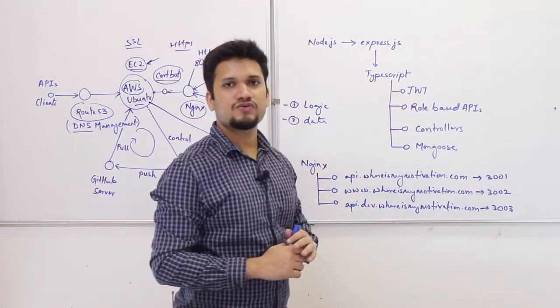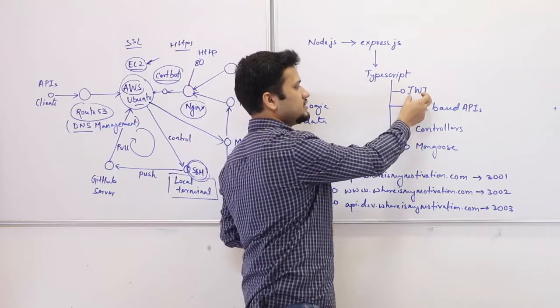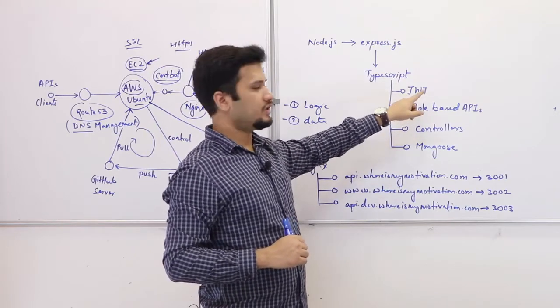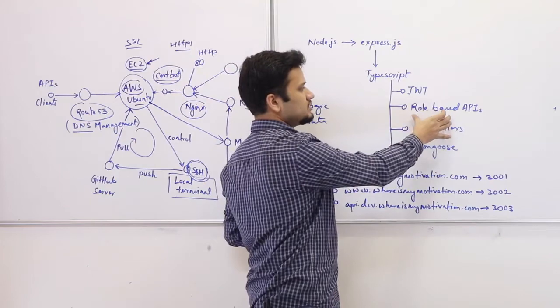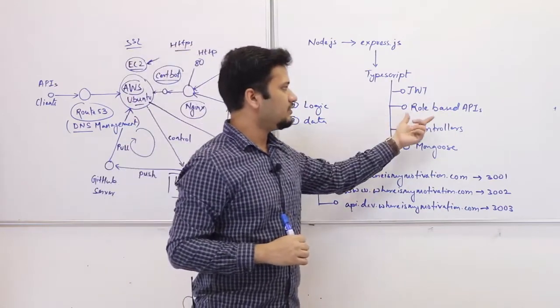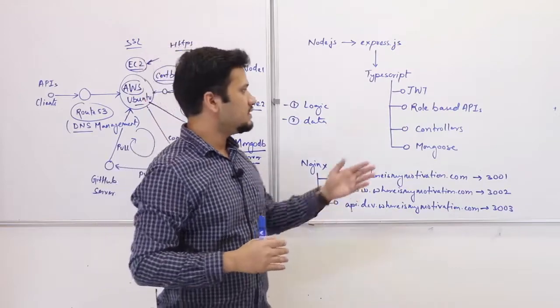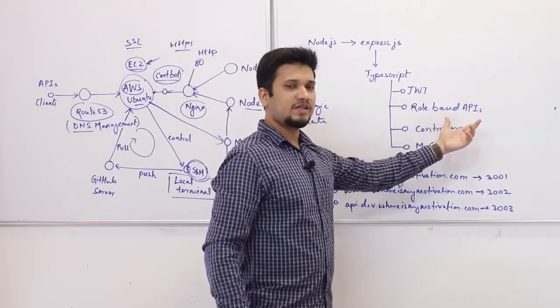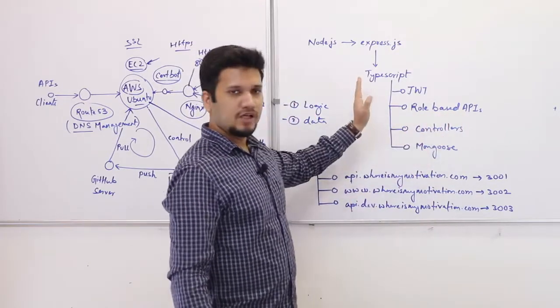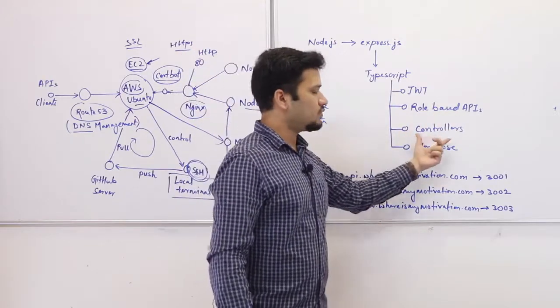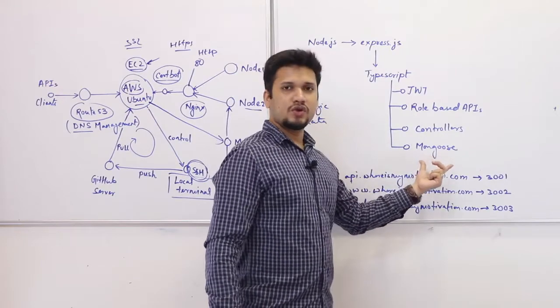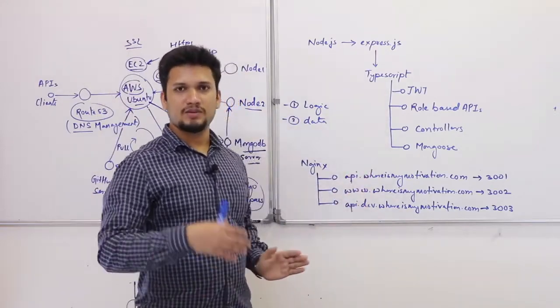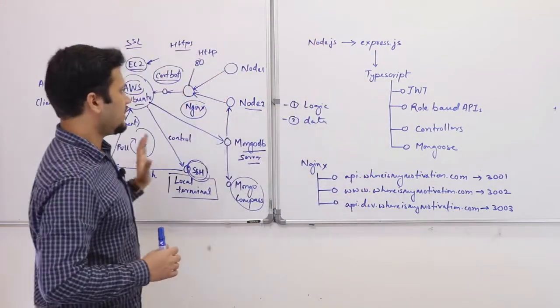Now, in the TypeScript, major things that I use for my application - I use the JWT, JSON Web Token. So, this is for authorization. And then I use role-based APIs. For example, admin will have access to certain APIs and a client can have access to other sorts of APIs. So, I use role-based APIs. I have controllers for each endpoint. For example, if you want to access the list of mentors, I have controllers for that. And I use Mongoose to connect with my MongoDB instance. So, this we will discuss further in some other video.